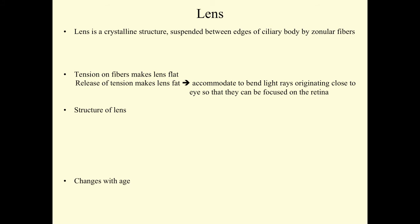The lens is a crystalline structure, suspended between the edges of the ciliary body by the zonular fibers. The lens is transparent, avascular, and biconvex. Tension on the zonular fibers makes the lens flat. Release of tension makes the lens fat, and this is necessary for accommodation to bend light rays originating from objects close to the eye so they can be focused on the retina.